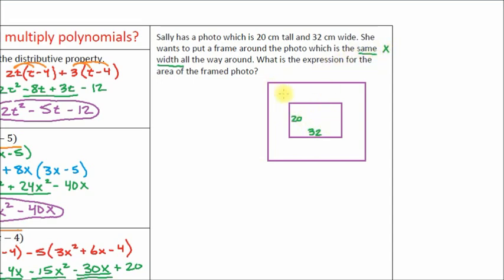Here's the tricky part — how do you diagram this? The width of this frame from the photo to the end is x. It says it's the same width all the way around, so this width is also x, and this width is x, and the same thing on this side — this width is x. So everywhere around this picture, we've got a frame that has a width of x centimeters.